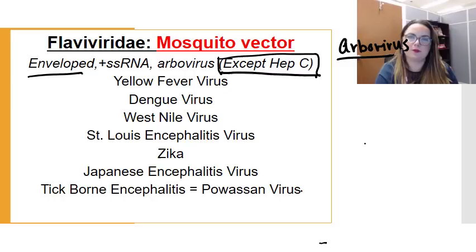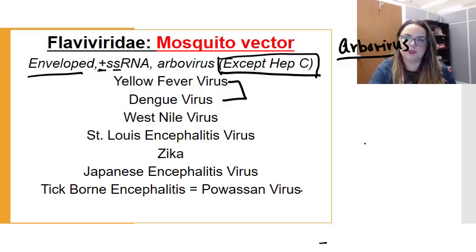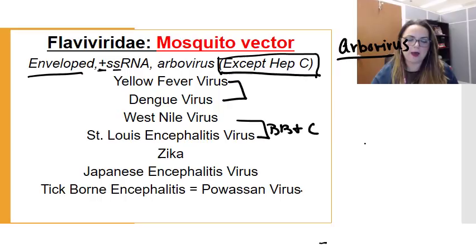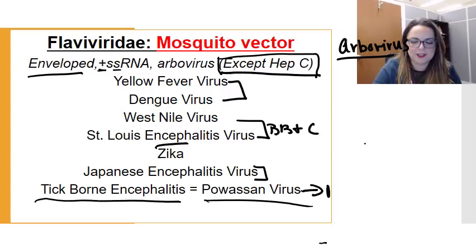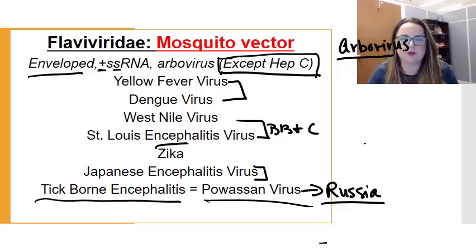As far as flaviviruses go, they're all enveloped viruses with a plus-sense single-stranded RNA genome. The main ones we're going to talk about here are yellow fever and dengue virus. We'll talk about West Nile virus and St. Louis encephalitis virus in the brain, behavior, and cognition block, mainly because they both have a predilection for causing encephalitis. That's also where we'll talk about Japanese encephalitis virus. I mention tick-borne encephalitis or Powassan virus in your notes — this is largely endemic to Russia, just kind of an honorable mention.